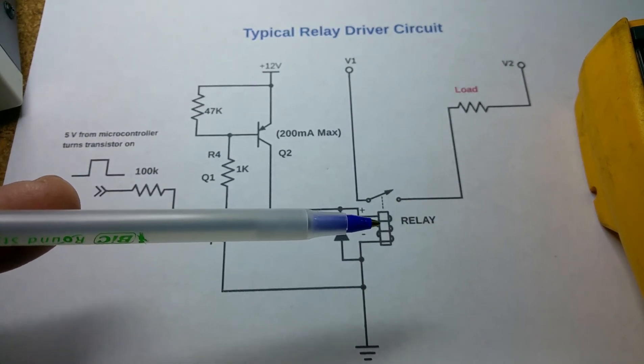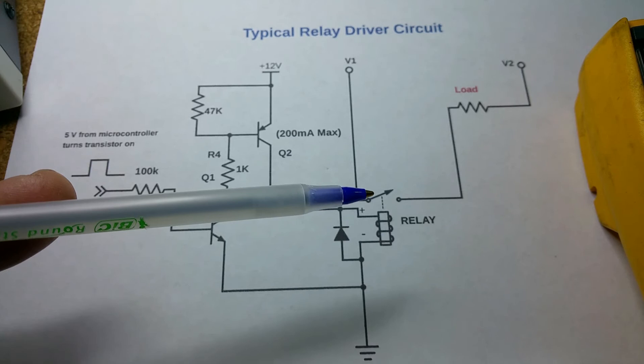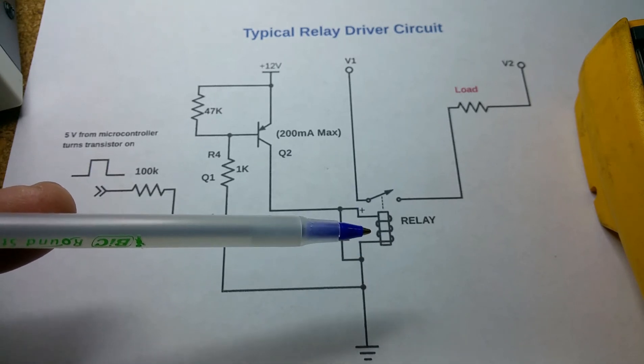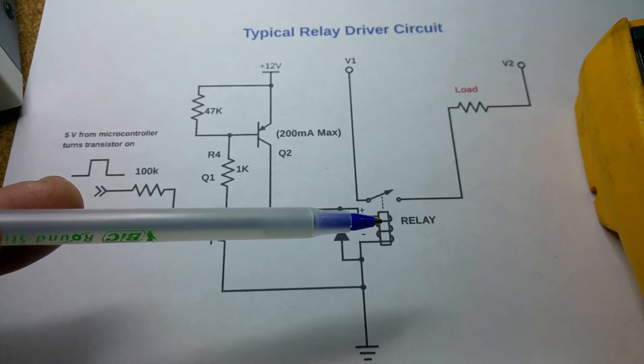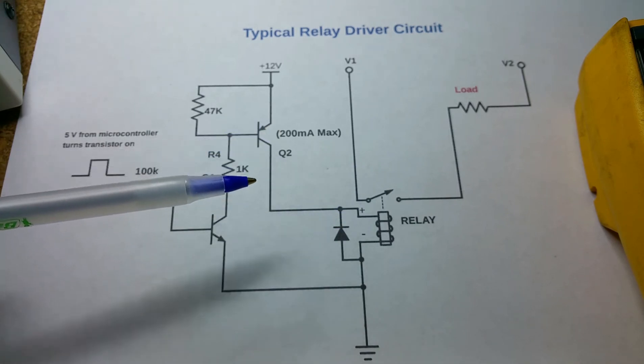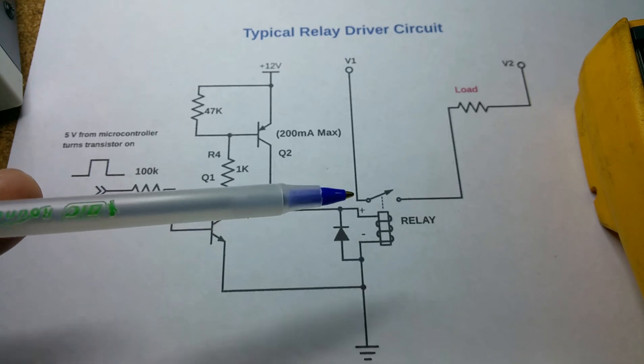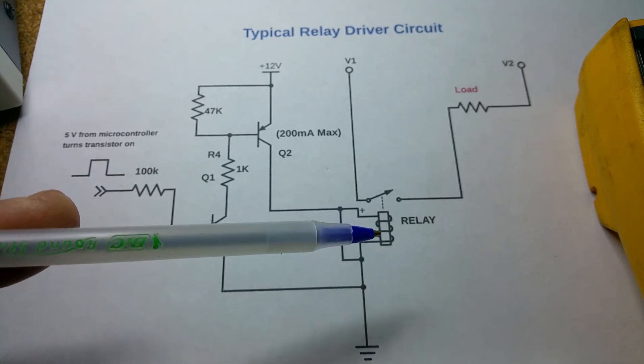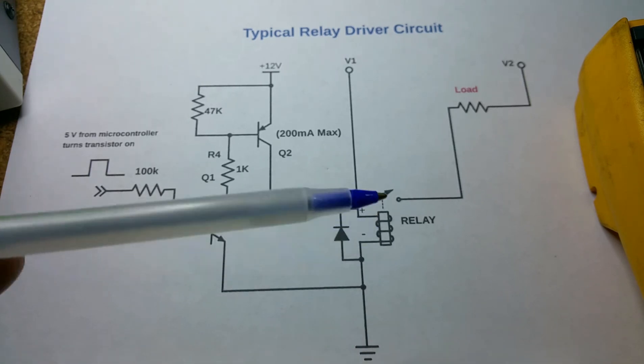Now if you have a relay with a coil resistance that's higher, you're actually putting less demand on that transistor because the coil resistance is higher, so there's less current flow through here. You're probably fine—just make sure the contacts are rated well enough.